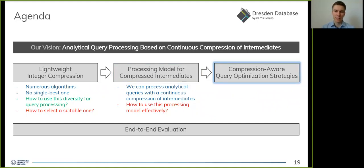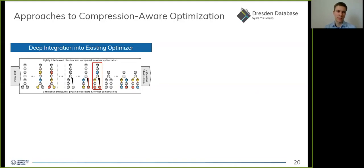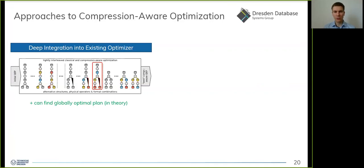Now we are able to process analytical queries with continuous compression of intermediate results. The question is how to use this processing model effectively — specifically, how should we choose formats for intermediate results? This brings us to our compression-aware strategies for query optimization. The most involved approach would be a deep integration: the query optimizer would consider different plan structures, different physical operators, and different format combinations simultaneously to return the globally best plan. While this might find the globally optimal plan, we all know that is not realistic, and it implies a large increase of the search space.